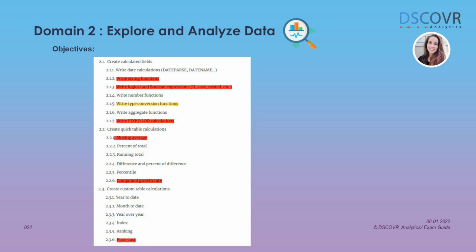For section 2.2, make sure you review the not-so-common table calculations, such as how to compute the 50-day or 100-day moving average, as well as the compound growth rate. When working with table calculations, it's very important to understand scope — for example, what would be the resulting output if you computed your calculation using table down versus table across?